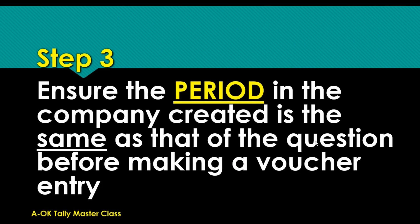Now you are about to record your transaction. You need to look out for your period — the question gives you a period, the financial year. Let's say it is the 2016 financial year. When you are going to record your transaction, you have to check the period in the system and make sure your period is in line with the question. You can go to Alt+F2 to check your period. Sometimes the period will be slightly different compared to what you actually created, based on the system you may be using. So always check the period first so you don't get frustrated during your exam.